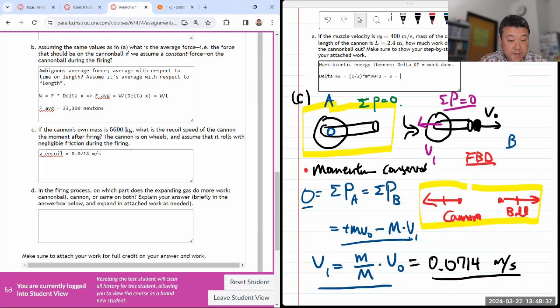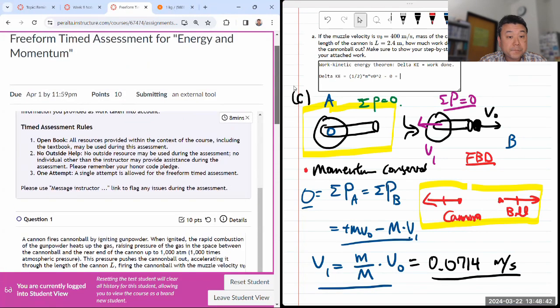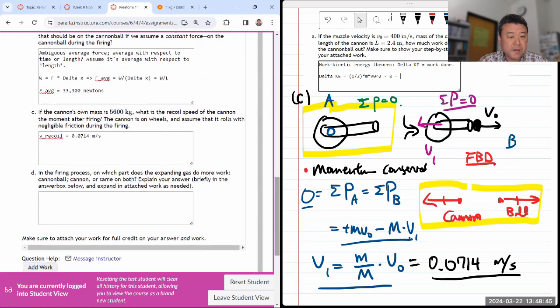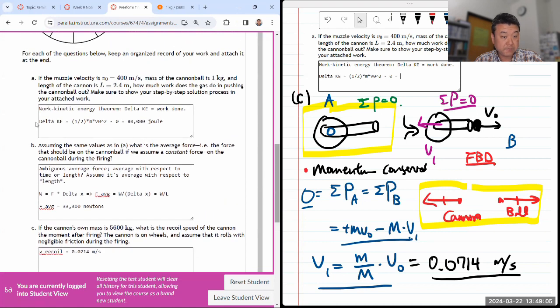In the firing process, which part does the expanding gas do more work? Cannonball, cannon or both? This is the kind of question where it's tempting for people to say both, aren't they like equal and opposite, all that stuff. So let me do it slightly different way. I'm going to calculate the kinetic energy, the same way I did before up here. Calculate the change in kinetic energy and attribute that change in kinetic energy to work done, which will tie into the work-energy theorem.